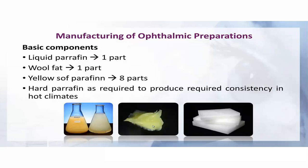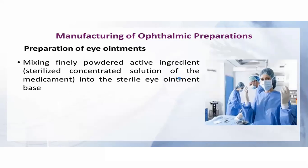The basic difference between a general ointment and an ophthalmic ointment is that the ophthalmic ointment must be completely sterile and prepared aseptically. The basic components are: liquid paraffin one part, wool fat one part, yellow soft paraffin eight parts, and hard paraffin as needed for the required degree of consistency.